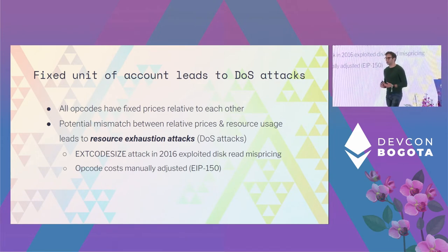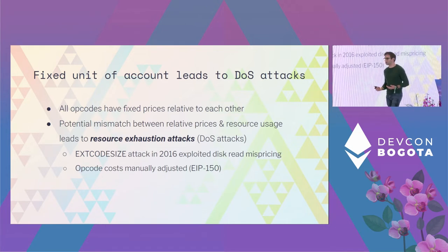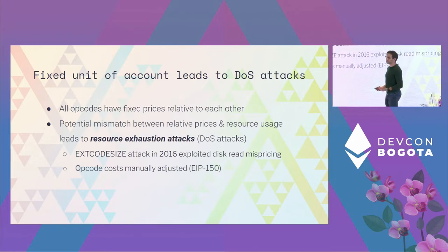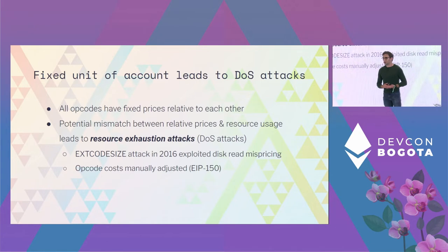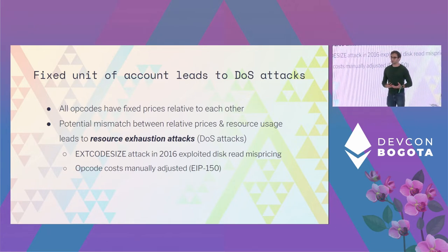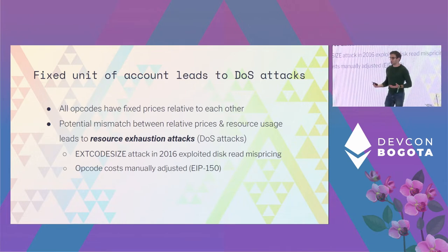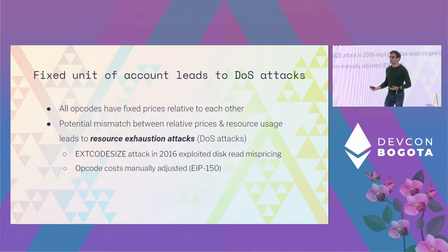There was a famous resource exhaustion attack back in 2016 that essentially made the Ethereum network unusable for quite some time. This was due to a disk read mispricing, and it was patched in a subsequent EIP. If we had had a multidimensional rather than a single-dimensional market, we might have been able to adjust prices such that there was no need to reprice the opcodes after the fact.